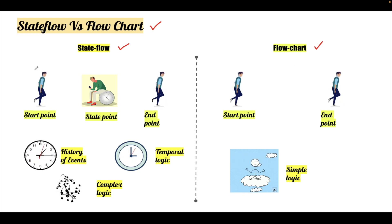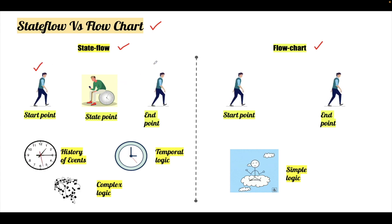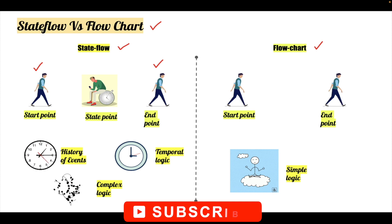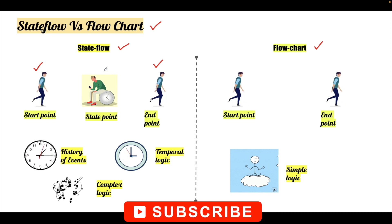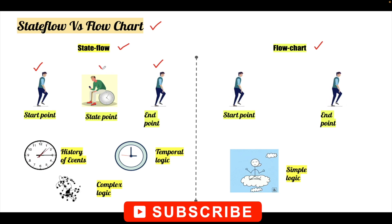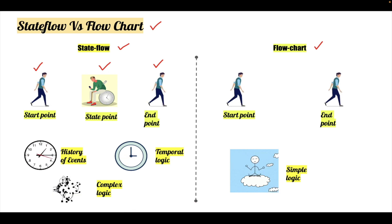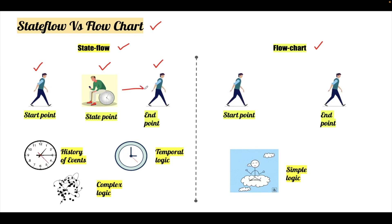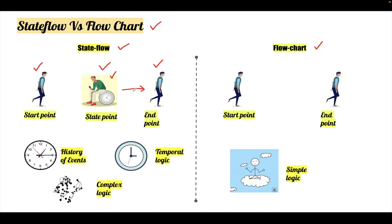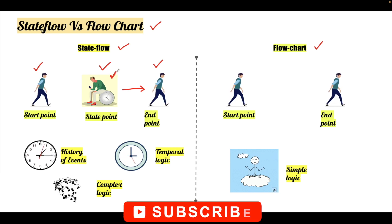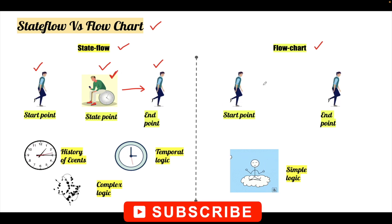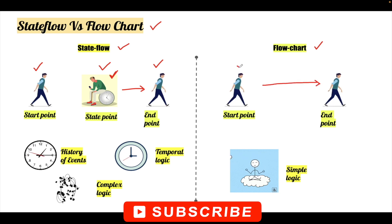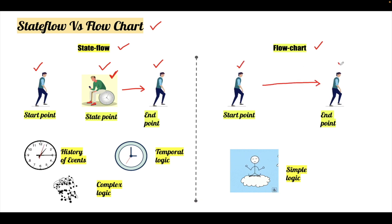In Stateflow we have a starting point where we begin the logic and we have an ending point, but in Stateflow we also have one more point where we can stay and wait for a particular moment of time — like a state. If we are not satisfying the further conditions to reach the end, we will stay in this particular waiting state, which is not possible in a flow chart. In a flow chart we need to complete the flow at a single sample time.